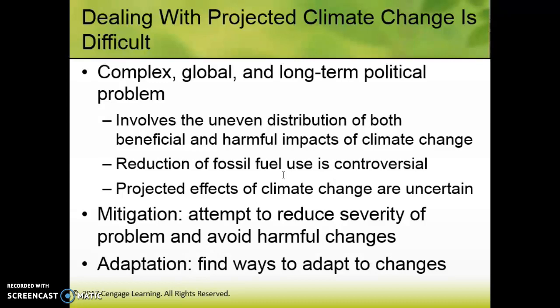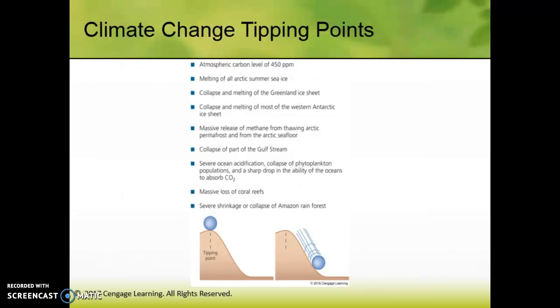Mitigation is the idea that we're going to try to reduce the severity of the problem — that's where we try to remove more carbon dioxide rather than reducing the amount that we put out. And then adaptation means finding ways to adapt to changes in the climate itself.